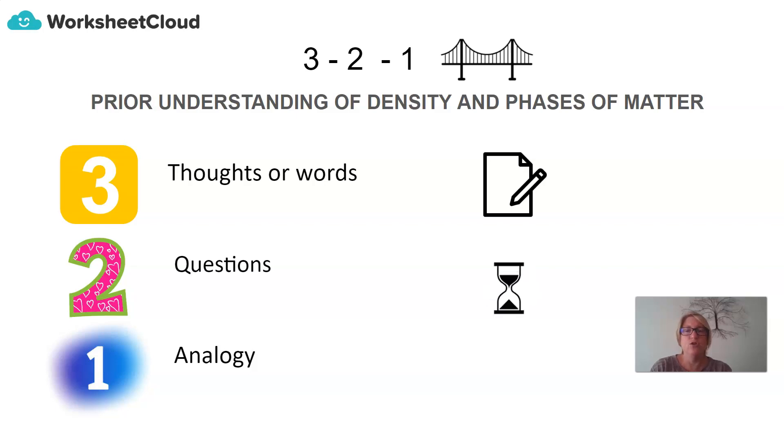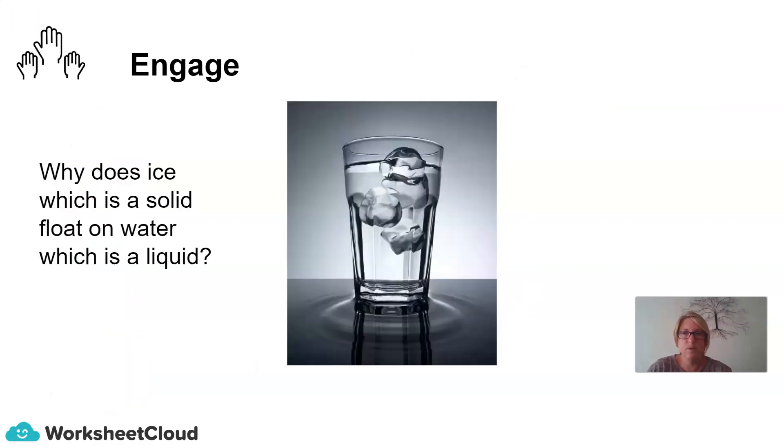I would like you to jot down three thoughts or three words that you have on density and phases of matter. Then, I would like you to pose any two questions that you have that link density and phases of matter. And then, are you able to come up with any analogy? An analogy is an unrelated concept that will link certain concepts and themes with density and phases of matter. So pause the video now. Spend about two to three minutes doing a prior understanding three, two, one.